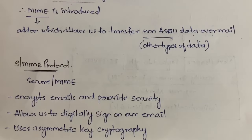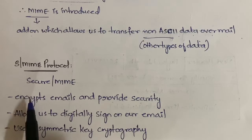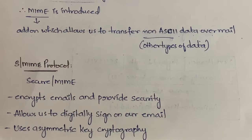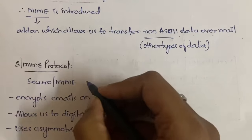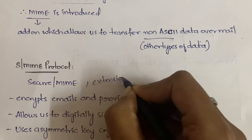Now, our actual topic is S/MIME. S/MIME is nothing but Secured MIME — it encrypts the emails and provides security. In normal MIME protocol we don't have encryption or decryption, therefore no security. But in S/MIME we have encryption and decryption, which is why it provides security to our email. You can also say S/MIME is an extension to MIME protocol.